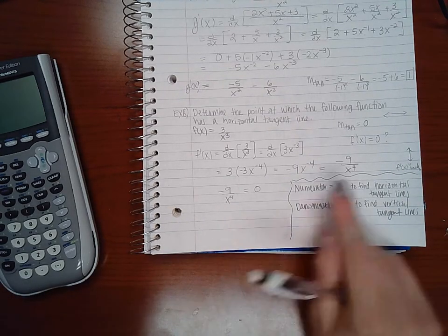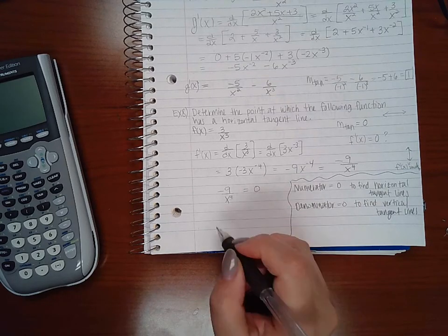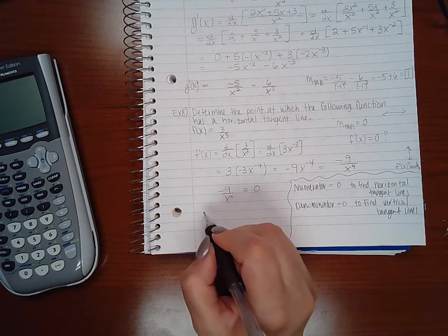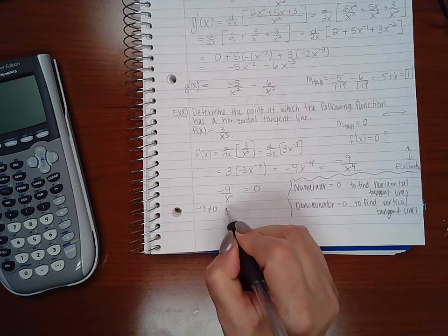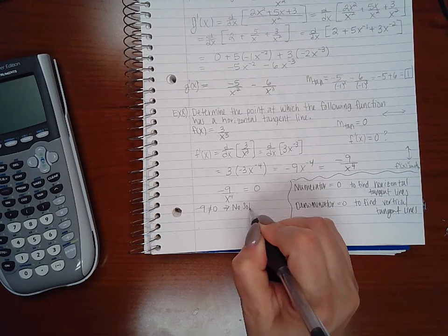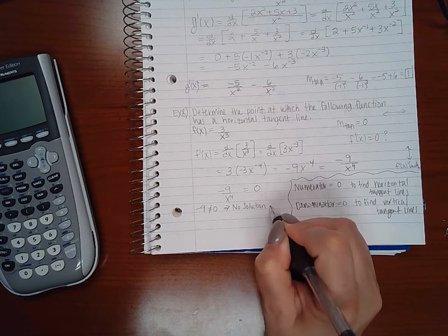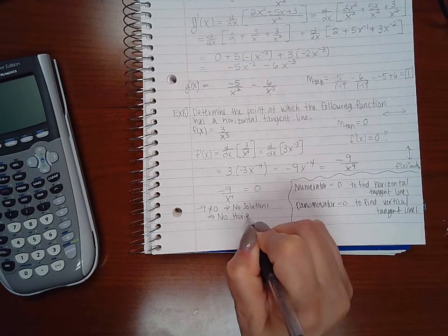Now here, since I'm trying to figure out where there's a horizontal tangent line, I'm only going to worry about my numerator, negative 9. But negative 9 can never equal 0, which means that I'm not going to get any solutions from that, which also means that there are no horizontal tangent lines.